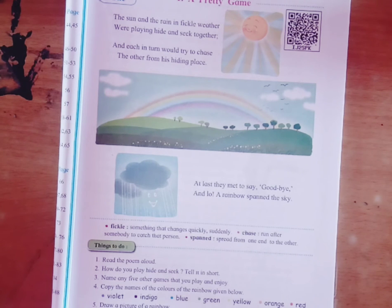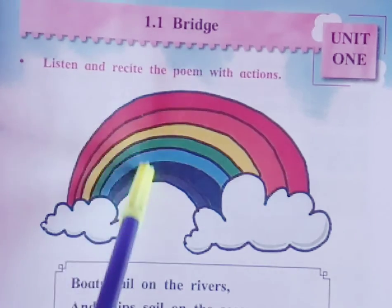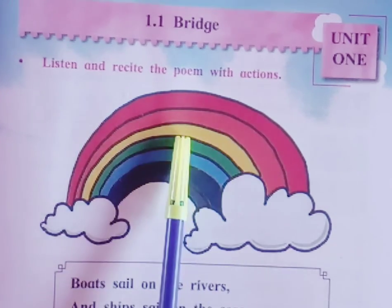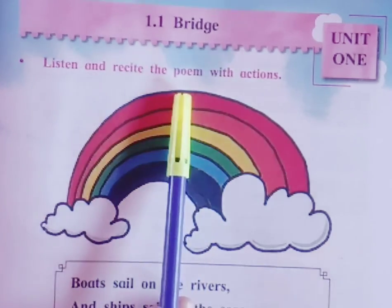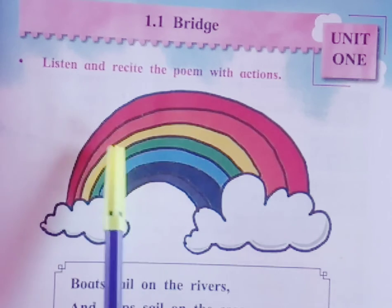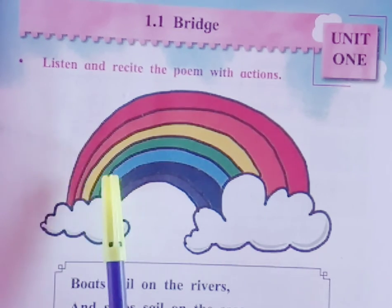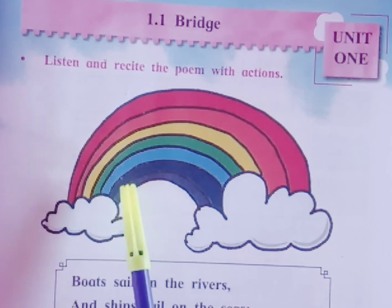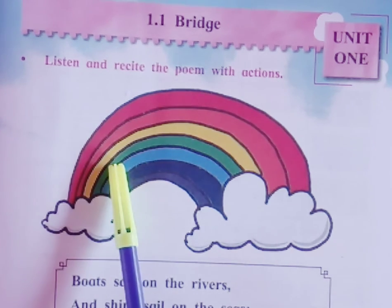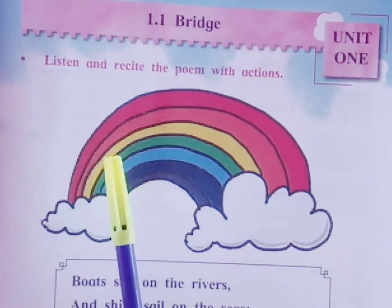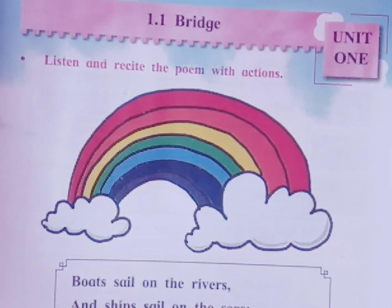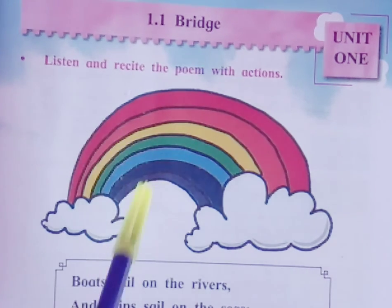Now see the picture of the rainbow. There are seven colors in the rainbow: violet, indigo, blue, green, yellow, orange, and red. These are the seven colors of the rainbow. We can easily remember these colors through a shortcut, and through this shortcut we can easily remember the colors of the rainbow.